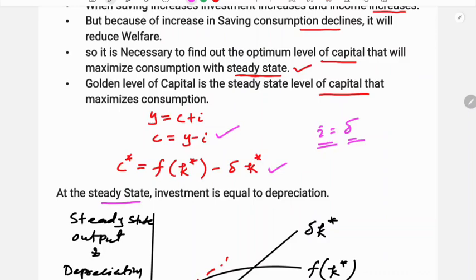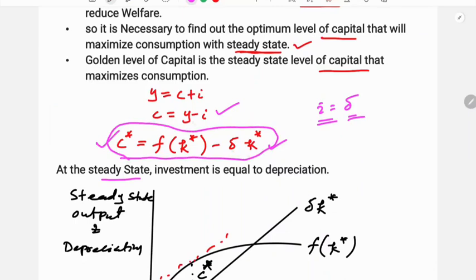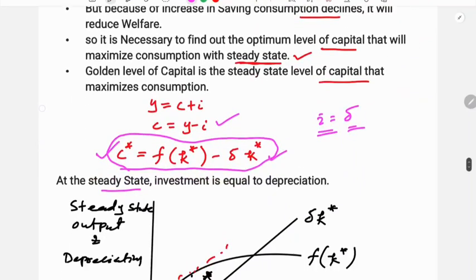So c star, that is consumption at the steady state level, equals f(k*) minus delta times k star. This is the equation for the golden level of capital. Consumption is maximized as the difference between output and investment — that difference is greatest at the golden level of capital.